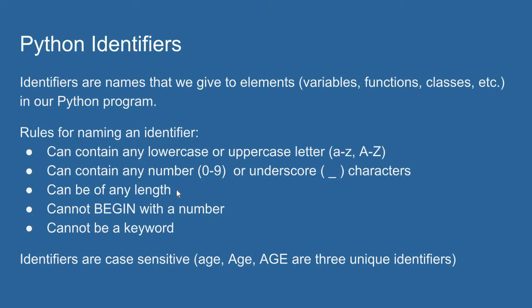Identifiers can be of any length, so we can make long identifiers. However, we cannot begin an identifier with a number. That's one of the exceptions to the rule here. We can use any of these characters as long as we don't start with a number.